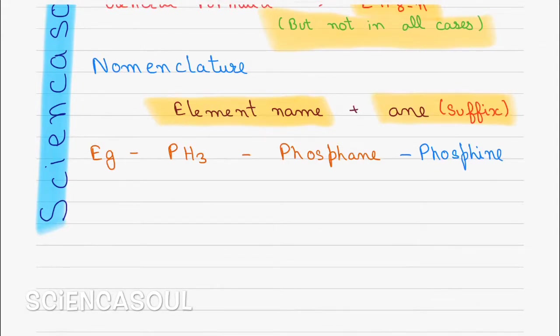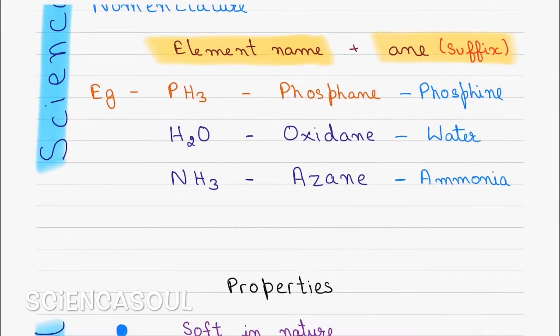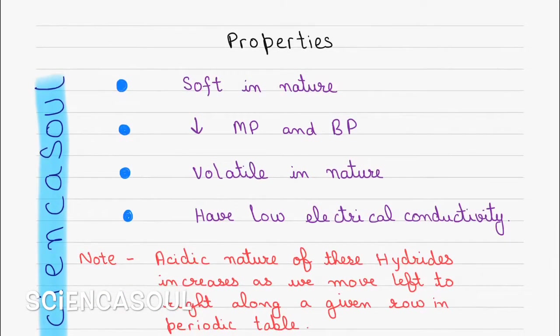Now we will take more examples like H2O. PH3 will be called phosphane, but its common name is phosphine. H2O's common name is water. Now another example, NH3, its systematic name is azane, but its common name is ammonia.